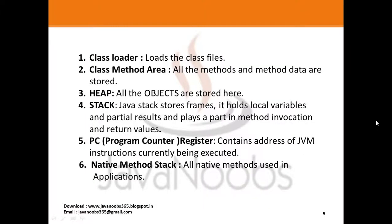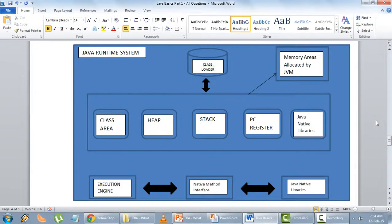Next you have the Java native method library, also called the native method stack. All native methods used in the application will be stored here. A native library basically consists of code inherited from previous languages like C and C++. Since we could not get rid of those methods, we use them here in Java — these are the native method libraries.